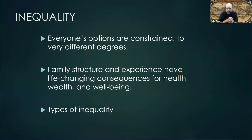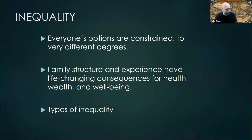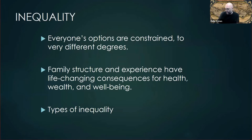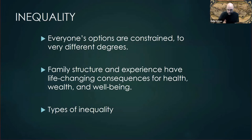Diversity and inequality: we have all these options and diversity is all about choice and freedom and look at all the different things we can do — but of course they're not really freely chosen. The amount and type of constraints vary a lot. That's one way of framing inequality: what choices do you have? Life chances in terms of families — family structure, the interaction of things like health and wealth and wellbeing with family life. It's not just rich and poor people or race and gender, but a set of inequality relationships.